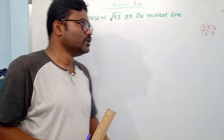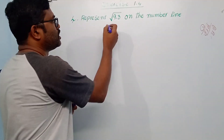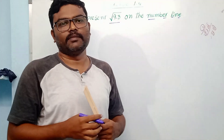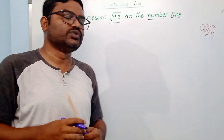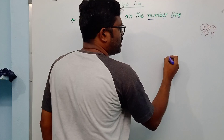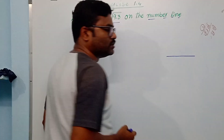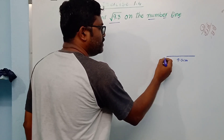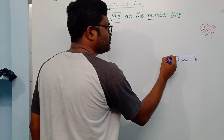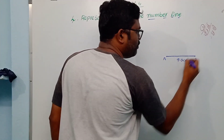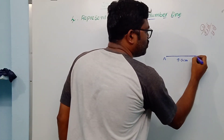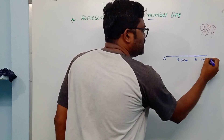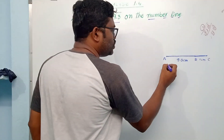The first problem is to represent the square root of 9.3 on the number line. Observe carefully — first we draw a rough diagram. Draw a line segment of 9.3 centimeters; let this be point A and point B. So AB is a line segment. From point B, we draw one more unit — one centimeter — and let this be point C. So BC is 1 centimeter.